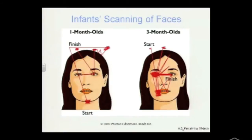Evolution seems to have pre-wired us to engage in these kinds of behaviours, specifically for what? Why would children prefer edges, contours, contrast, angles? What's the idea behind that? Remember?